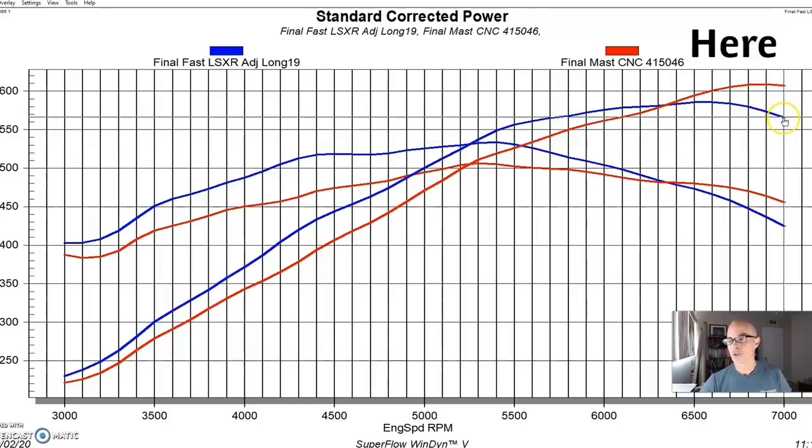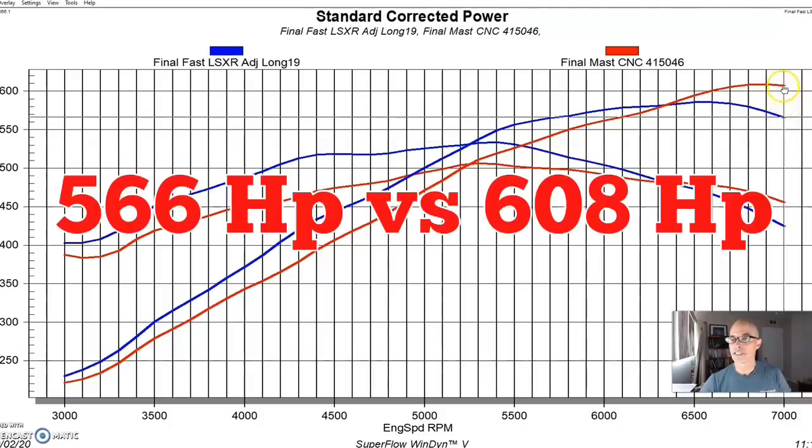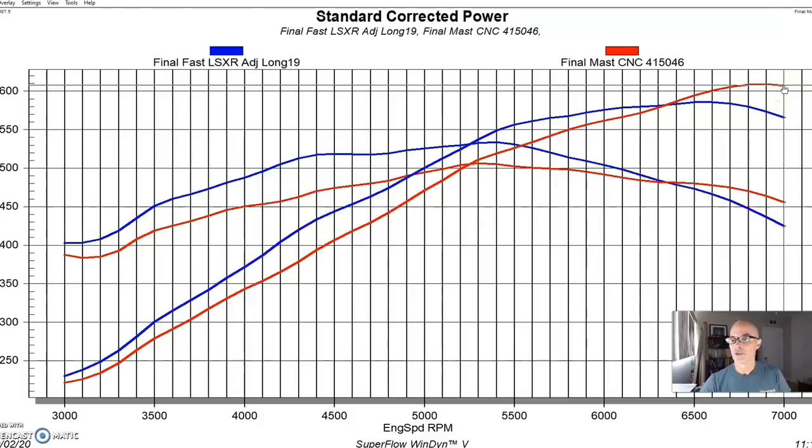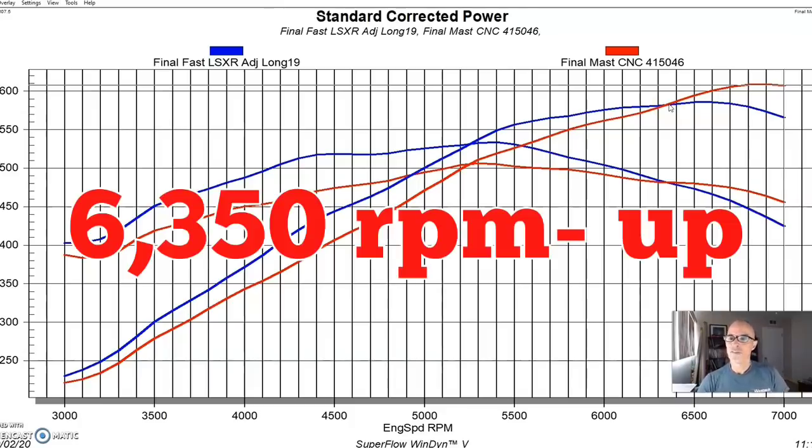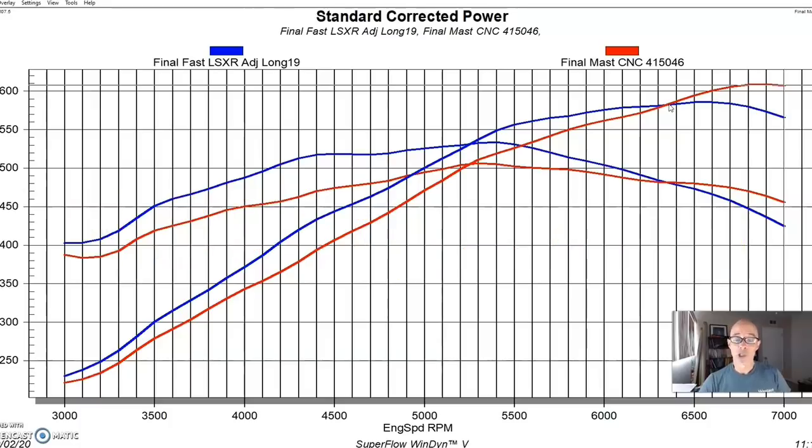They lose power down low because of runner length, and then they'll pick up power at the top. The difference at 7000 was quite a bit. It was 566 compared to 608. But the single-plane intake, the short-runner, only made more power from 6350 on out, and everywhere below that, it made less power than the long-runner stuff.